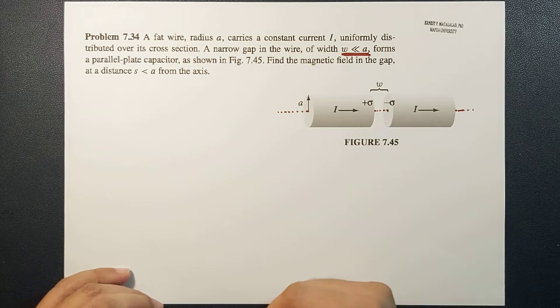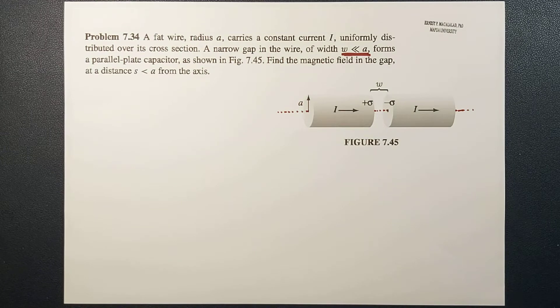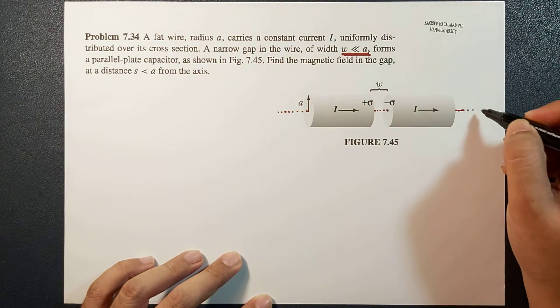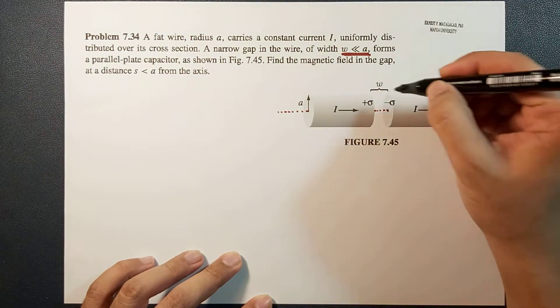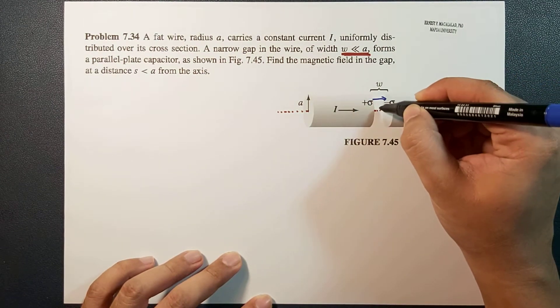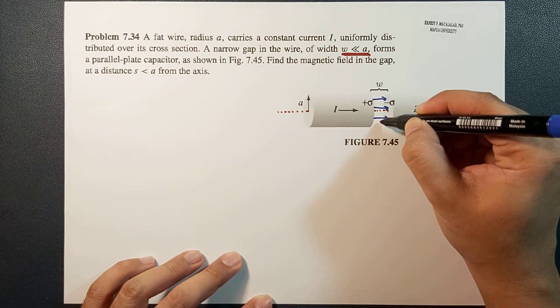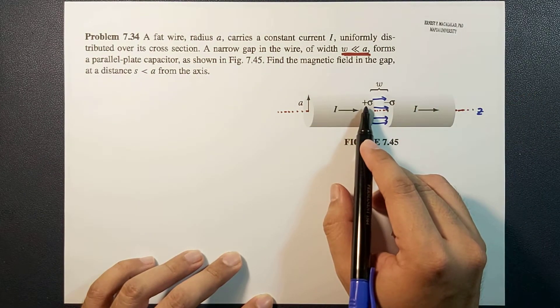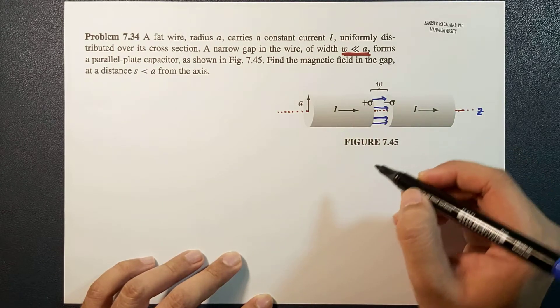Okay, so for a parallel plate capacitor, the electric field will be directed along this direction. So let's call this the Z direction. So that means the electric field will be in this direction because this is your positive charge and this is your negative charge.